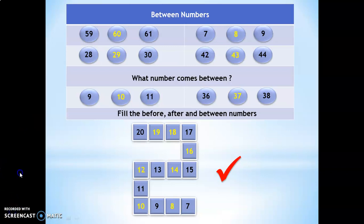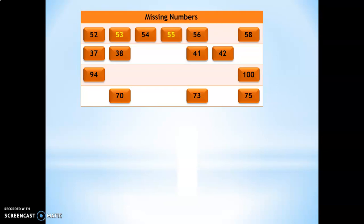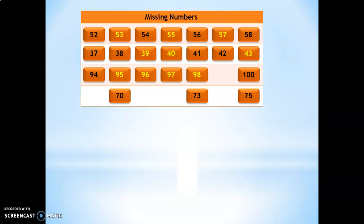Next, we shall move on to the missing numbers in a series concept. Even for missing numbers, you could frame your questions differently each time. In the first series, one number in between is missing — after 52 is 53, after 54 is 55, after 56 is 57. In the next series, two numbers are missing: 37, 38 — missing numbers are 39, 40 — then 41, 42 are given, next is 43. Another way: give the first and last number and ask children to write the missing numbers: 95, 96, 97, 98, 99, 100.